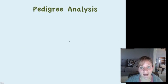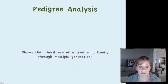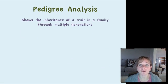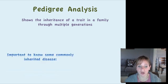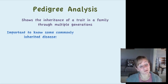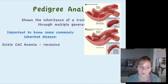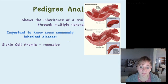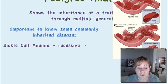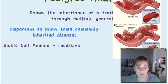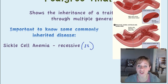We're going to spend the second half of this video looking at pedigree analysis. Pedigrees are a great way to show the inheritance of a trait in a family through multiple generations, and it's really important to know how common diseases are inherited. The first example is sickle cell anemia, which is a recessive disease — meaning you need two recessive alleles (ss) in order to have it. With sickle cell anemia, the red blood cells sickle and clog the arteries, so you don't get enough oxygen to your tissues.